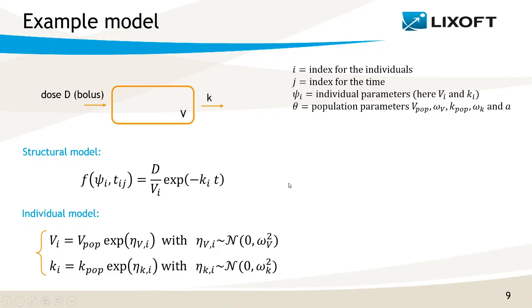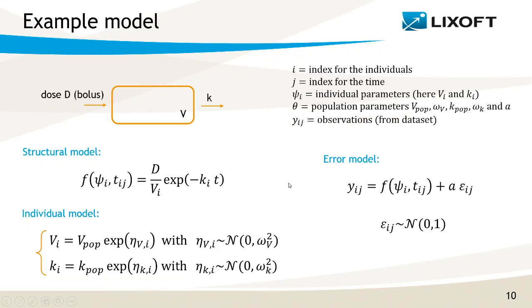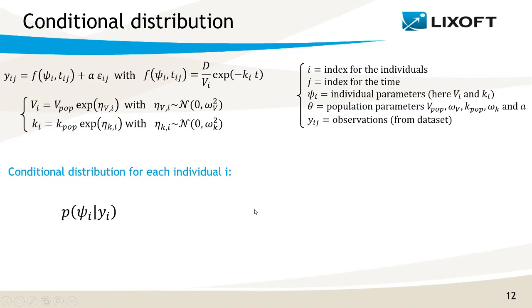As part of the statistical model, we also need to define how the observations from the dataset are related to the model predictions. This is done via the residual error model, and I will here use a constant error model. The observations yij are equal to the model prediction plus an error term. Epsilon represents a standard normal random variable, and A is the magnitude of the error. This means that the observations follow a normal distribution centered around the model prediction with standard deviation A.